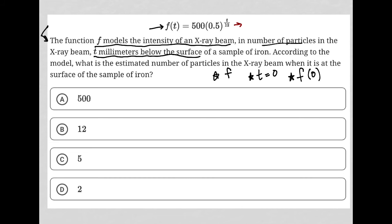Well, I would just replace t with 0 in this function. So f of t becomes f of 0, and we still have our 500. We'd still have our 0.5. And then instead of t over 12, it becomes 0 over 12.